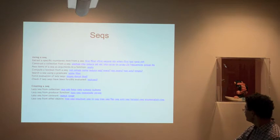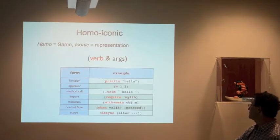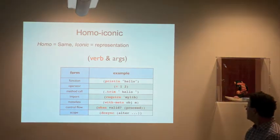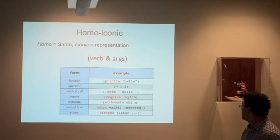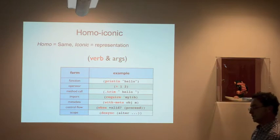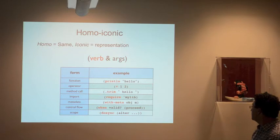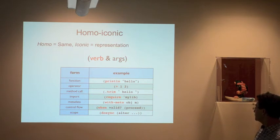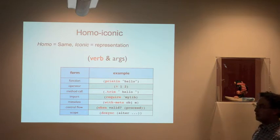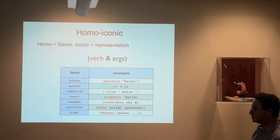This slide from Stuart Halloway discusses being homoiconic — 'homo' meaning the same and 'iconic' meaning representation. There's a uniform syntax where the first element after the opening parenthesis is the verb and everything else is arguments. Whether it's a function, an operator, a method call, or an import, you follow the same convention — which is quite elegant. If you view the parentheses as a list, the language itself is a list, embodying the idea of data as code and code as data.